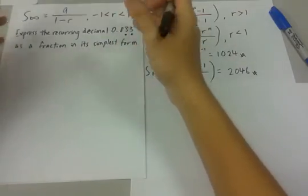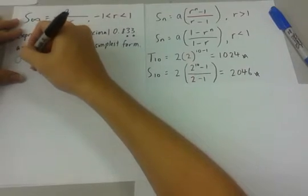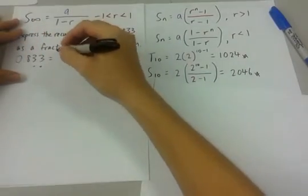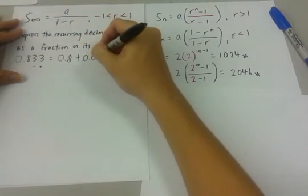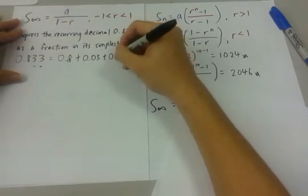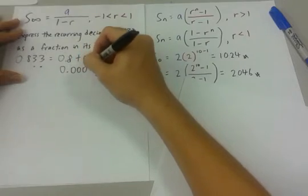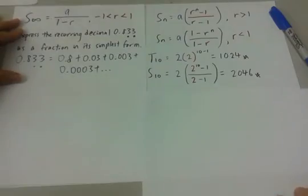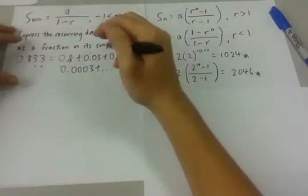How do we start, how do we break it down? Firstly, we rewrite this expression as 0.8 plus 0.03 plus 0.003 plus 0.0003 and the three dots to denote that it is a continuous pattern.